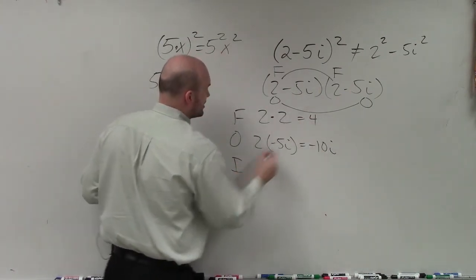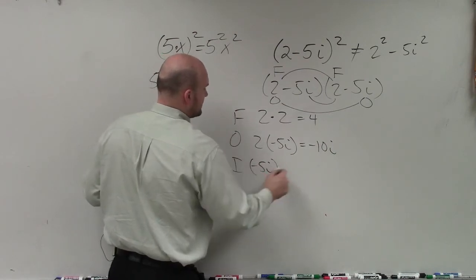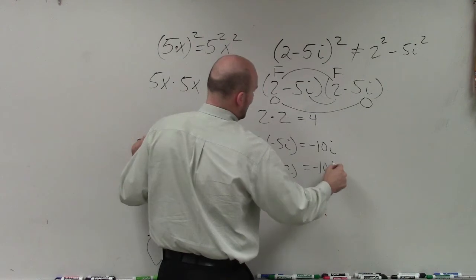Then we do the inner terms, which again would be negative 5i times 2, which will leave us with negative 10i.